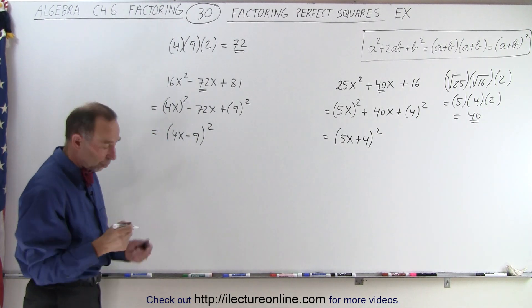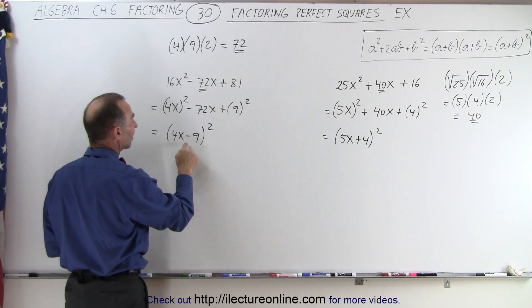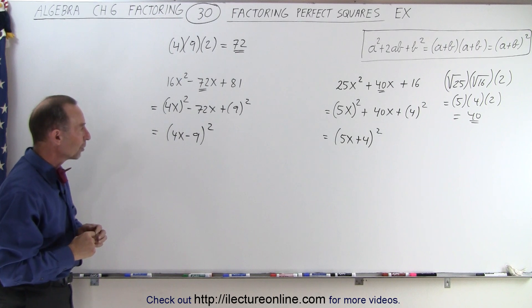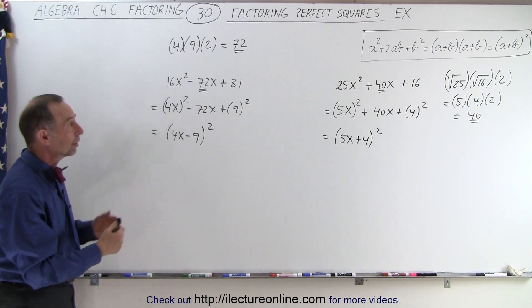And again, to check real quick, you multiply 4 times minus 9, which is minus 36, times 2 gives you minus 72, which is the middle term of the original trinomial. And that is how you recognize that you're dealing with a perfect square.